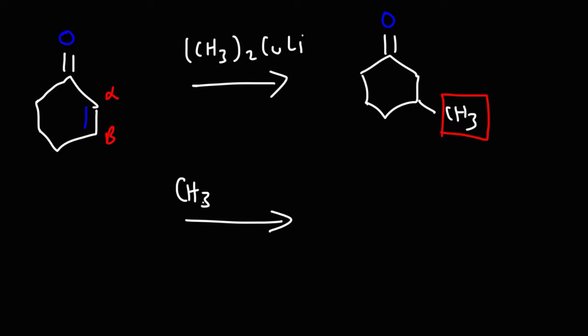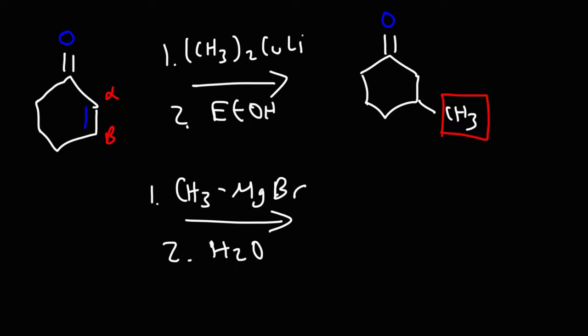Now if we were to use a Grignard reagent, the situation will be different. With the use of a Grignard reagent, the ketone will be reduced into an alcohol, and we're going to add the R group at the tertiary carbon. The double bond will be unaffected, so just keep that in mind.